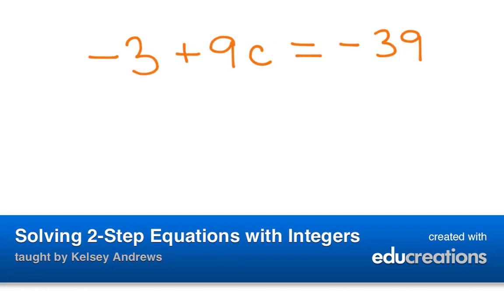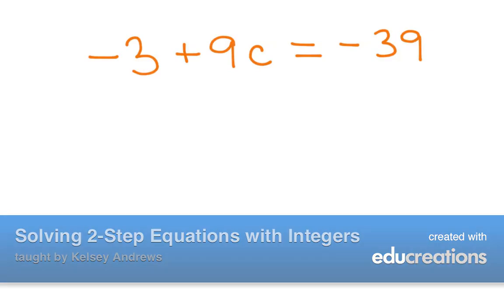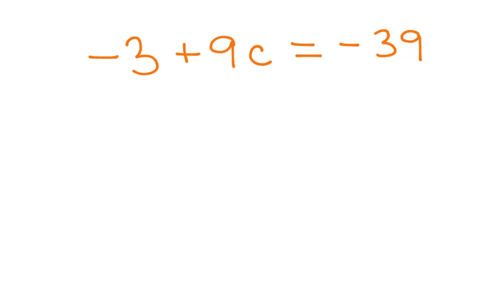To solve this two-step equation, we want to undo our order of operations. We can see here's our C. We want to undo the math that's there with the C — we want to isolate that C, isolate the variable.